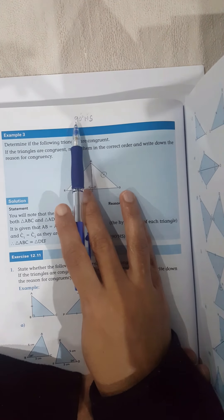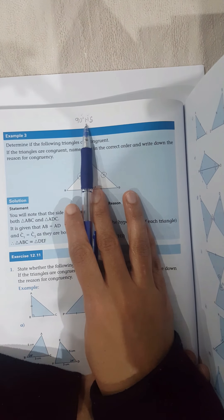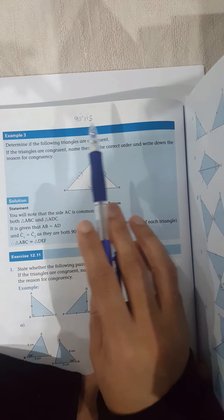I have to look for a 90 degree sign in both triangles. I have to look for equal hypotenuse in both triangles, and I have to find one side that is equal in both triangles.